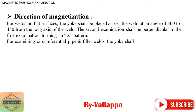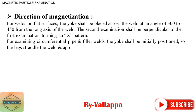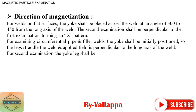The second examination shall be perpendicular to the first examination, forming an X pattern. For examining circumferential pipe and fillet welds, the yoke shall be initially positioned so the legs straddle the weld and the applied field is perpendicular to the long axis of the weld. For the second examination, the yoke legs shall be positioned parallel to the long axis of the weld.